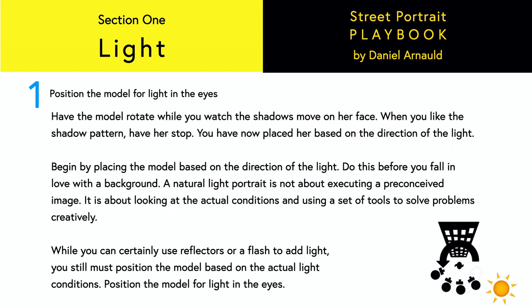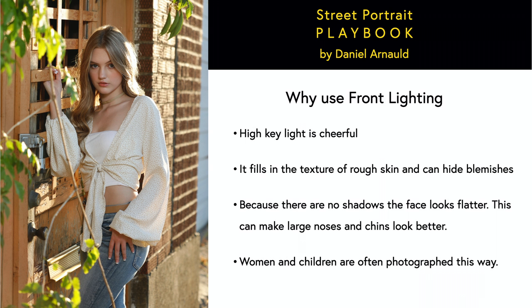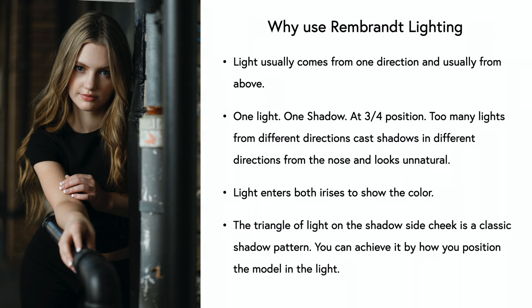Position the model for light in the eyes. Why use front lighting? High-key lighting is cheerful. It fills in the texture of rough skin and can hide blemishes. Because there are no shadows, the face looks flatter — this can make large noses and chins look better. Women and children are often photographed this way. Why use Rembrandt lighting? Light usually comes from one direction and usually from above — one light, one shadow — at a three-quarter position.